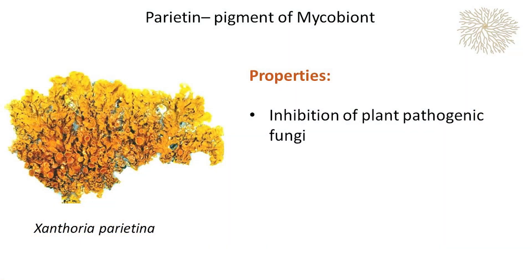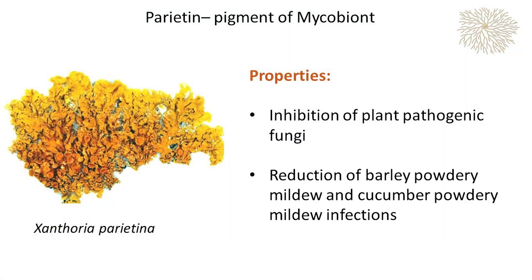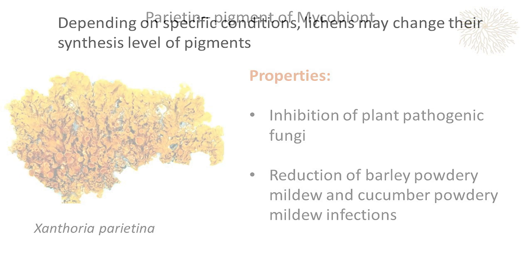Additionally, parietin has been found to inhibit plant pathogenic fungi and has proven effect in reducing barley powdery mildew and cucumber powdery mildew.